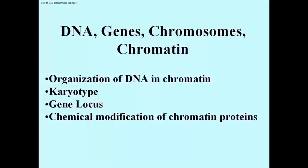Consider the structure of the DNA double helix in the context of the genes arrayed along the DNA, and how the DNA is organized into chromatin, and when the cell is dividing into chromosomes. We'll look at the basis for the organization of DNA and chromatin, the association of different proteins with the DNA. We'll look at the karyotype of chromosomes, and we'll take a look at how genes are actually arrayed along chromosomes. We'll take a brief look at how the chemical modification of chromatin proteins causes the chromatin to change conformation.